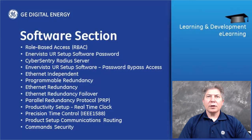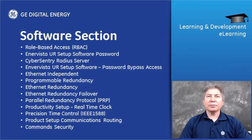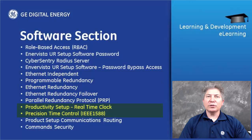Software Section: We will review how to log into a relay with CyberSentry enabled using the EnerVista setup program. We'll take a look at role-based access control and its functions, default passwords, RADIUS server configuration, bypass access, network port configuration for redundancy and PRP, the real-time clock screen for time synchronization, gateway settings known as routing, and the security features under the commands menu.